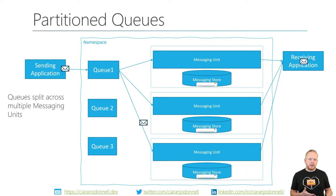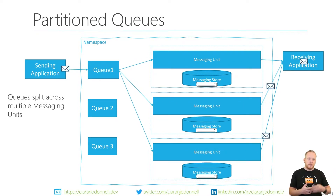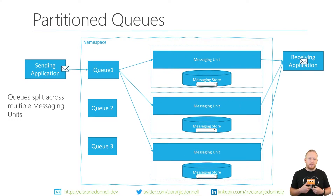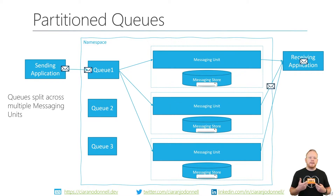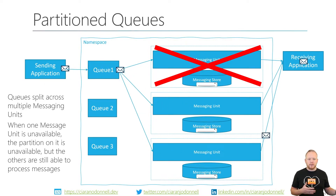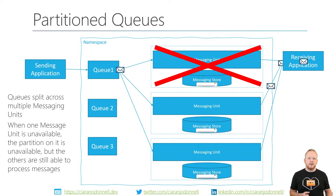When we create partitioned queues, if you enable partitioning on the queue and hit create, it'll actually get created across 16 different messaging units. Then, depending on the partition key — or an algorithm if you don't specify one — the messages will flow across those different messaging units. So if one of those becomes unavailable, messages can't be processed through that unit, but the other messaging units that are still available continue to process messages.